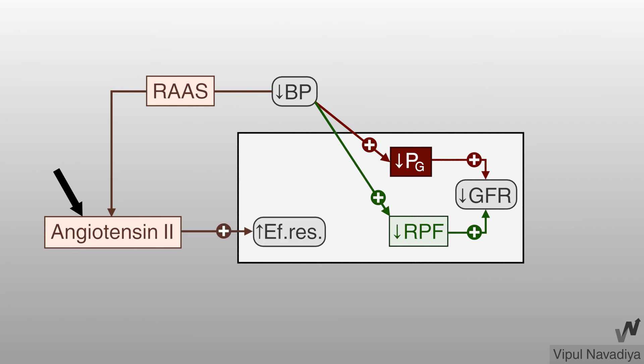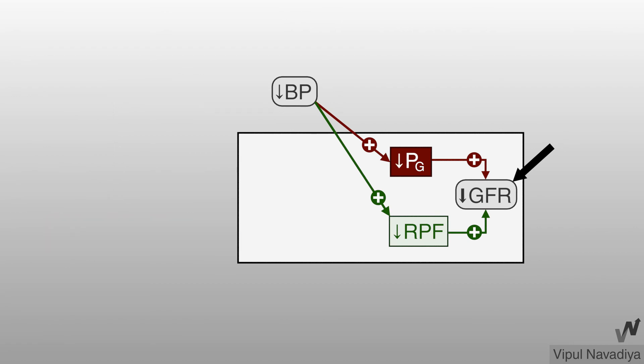Angiotensin II causes constriction of efferent arterioles which brings glomerular hydrostatic pressure back towards normal up to some extent. So in presence of angiotensin II, there is only small fall in GFR. Without angiotensin II, GFR may fall to a dangerous level.